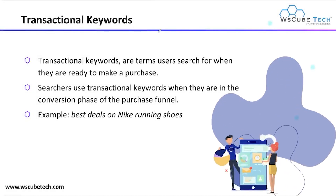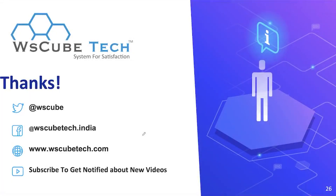Next we have transactional keywords. These are terms used when the searcher is already ready to make a purchase — they are at the bottom of the purchase funnel, in the conversion phase. For example, 'best deal on Nike shoes' — they are asking transactional questions. These are your transactional keywords.